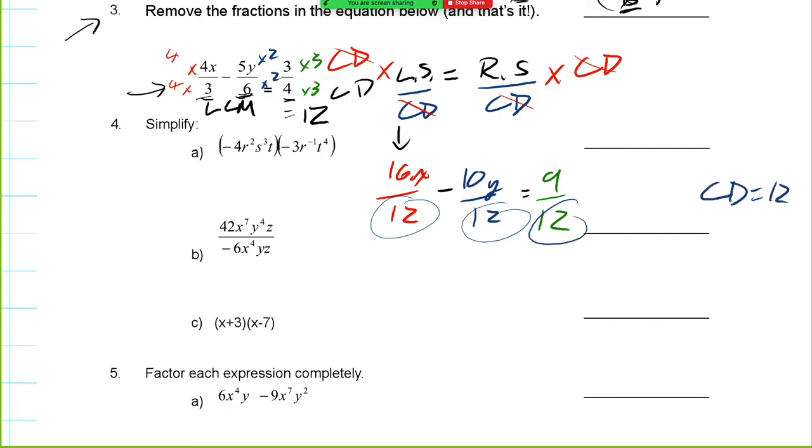So now what we can do is technically multiply the left side—so this is the left side and the right side. We can multiply them by the same value. So we're actually going to multiply this by 12 and this by 12. Very quickly, on the right side, we know that these two 12s cancel out, and we're left at the value of 9. So we know this will be equal to 9.